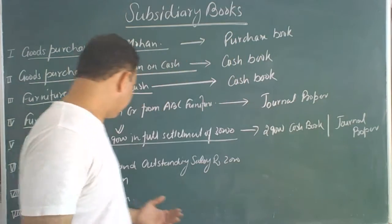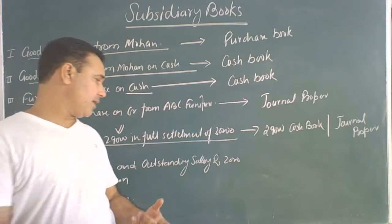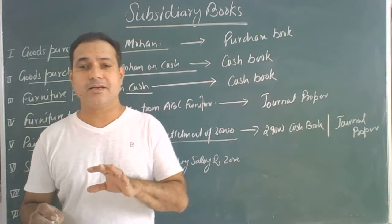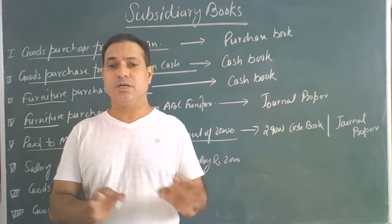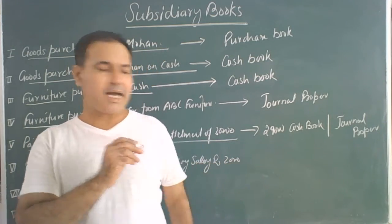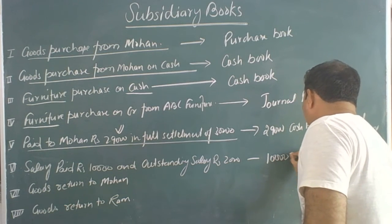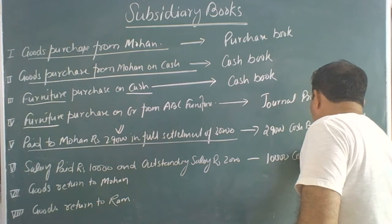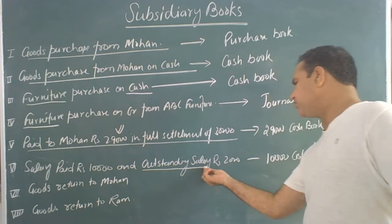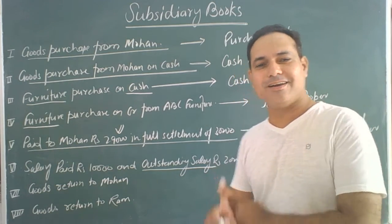The next transaction is: paid salary 10,000 and outstanding salary is 2,000. The 10,000 that we paid will go to the cash book. The outstanding salary that we have not yet paid will go to the general journal.